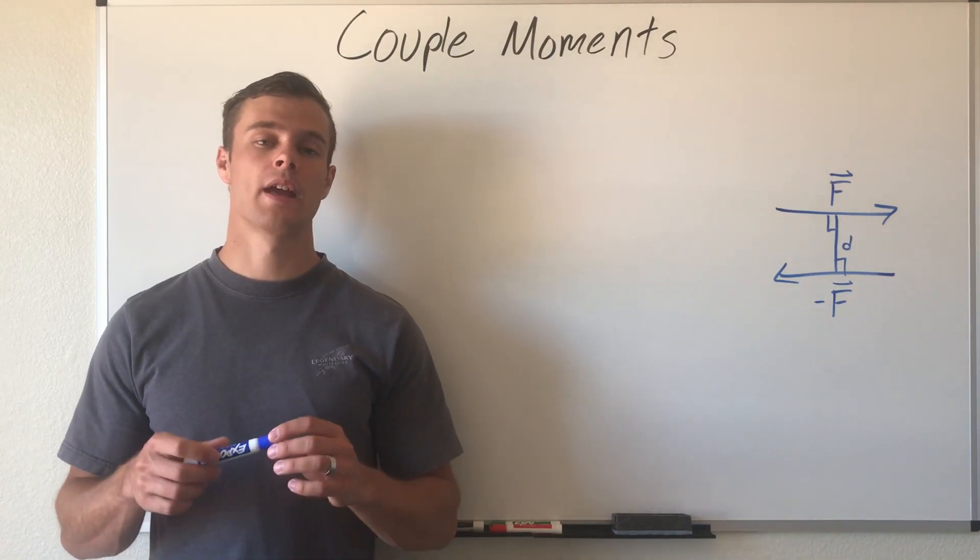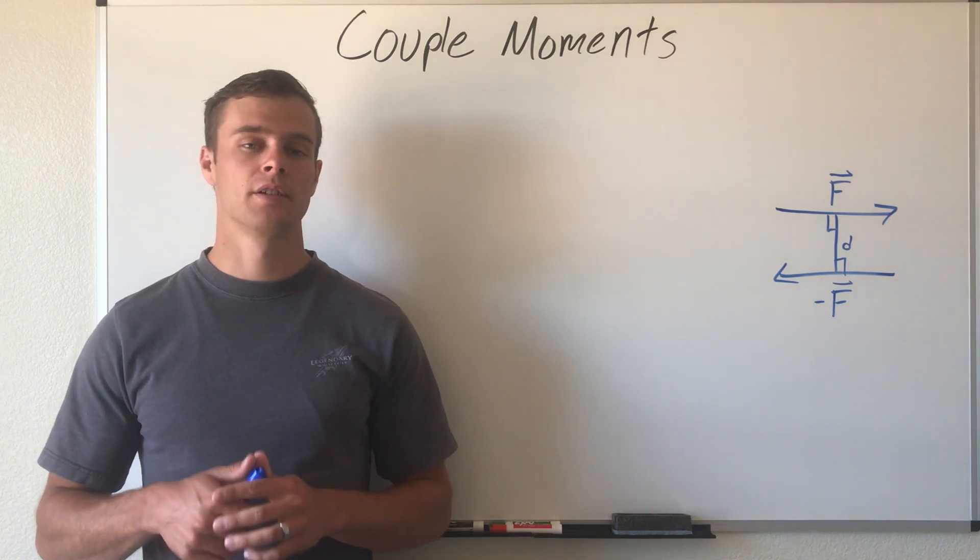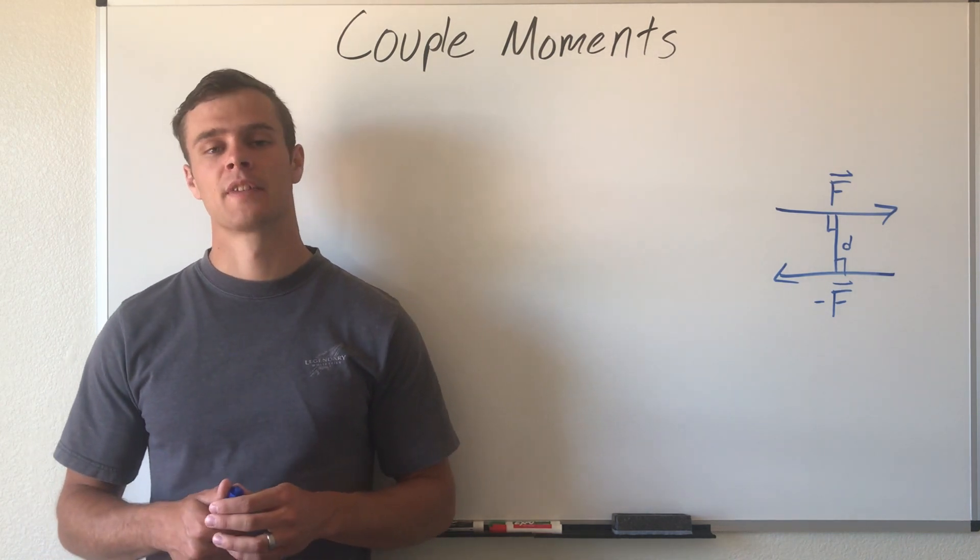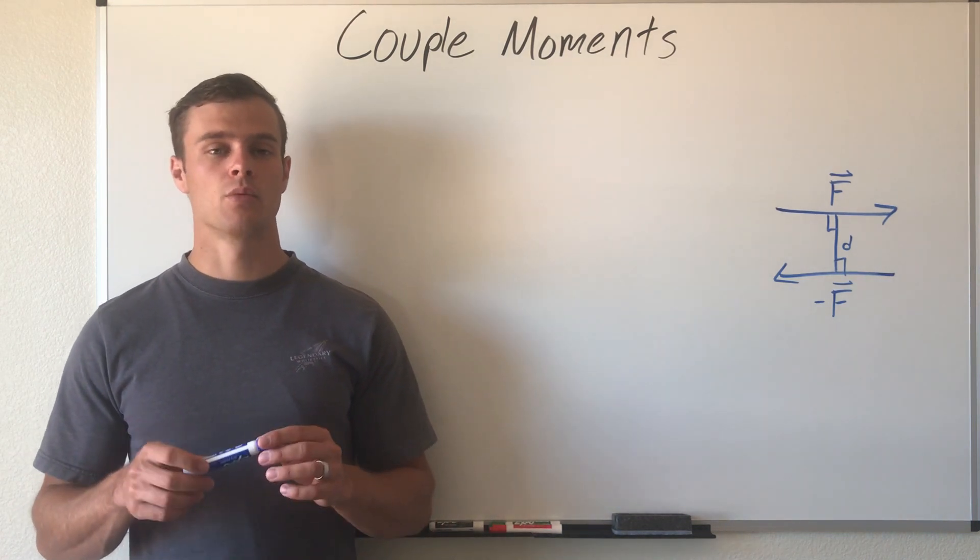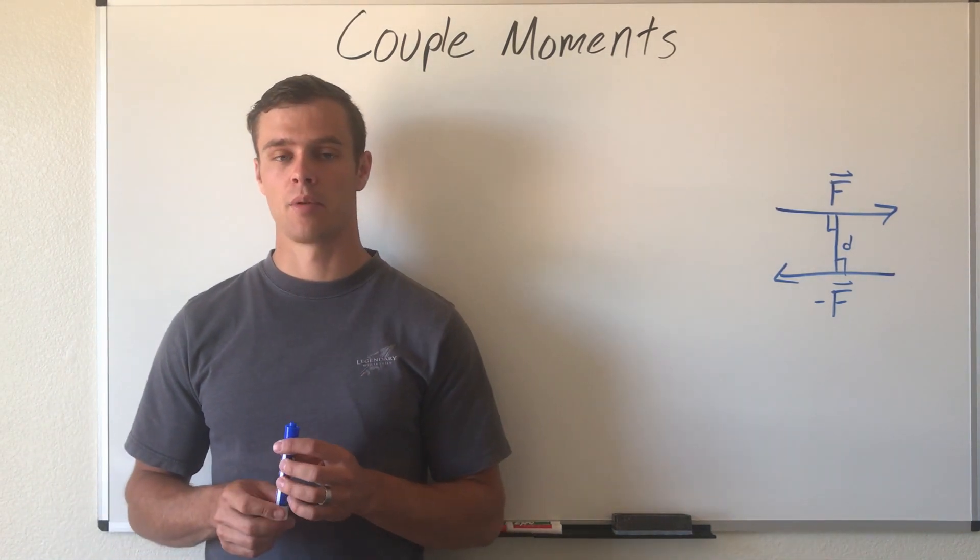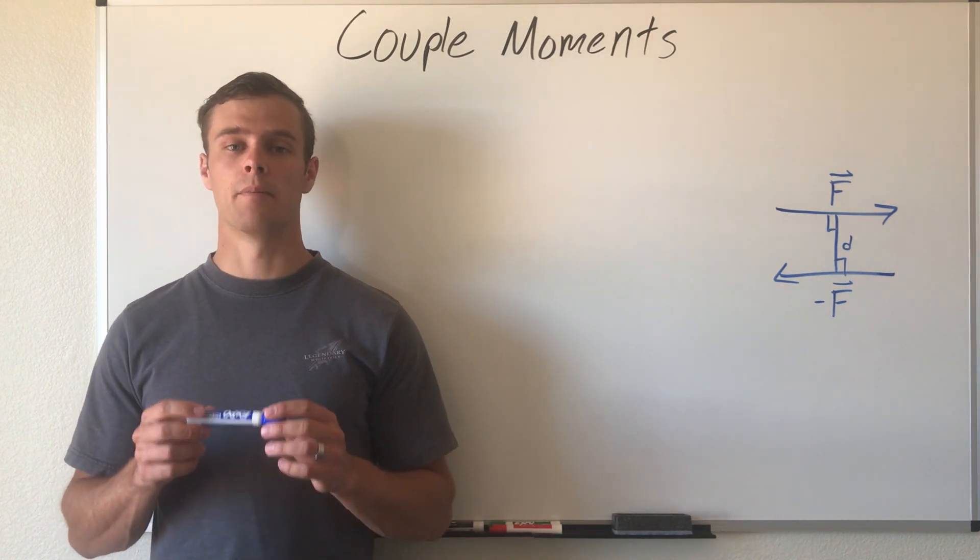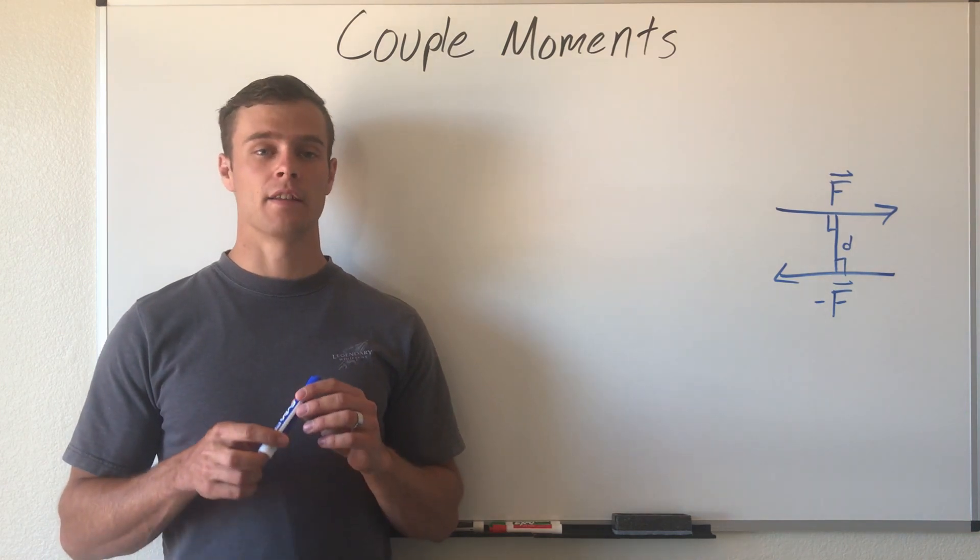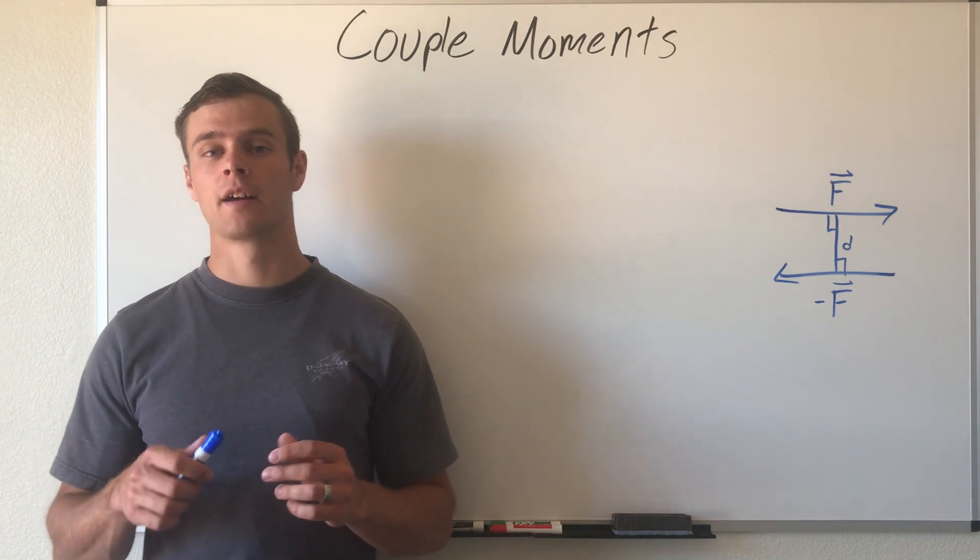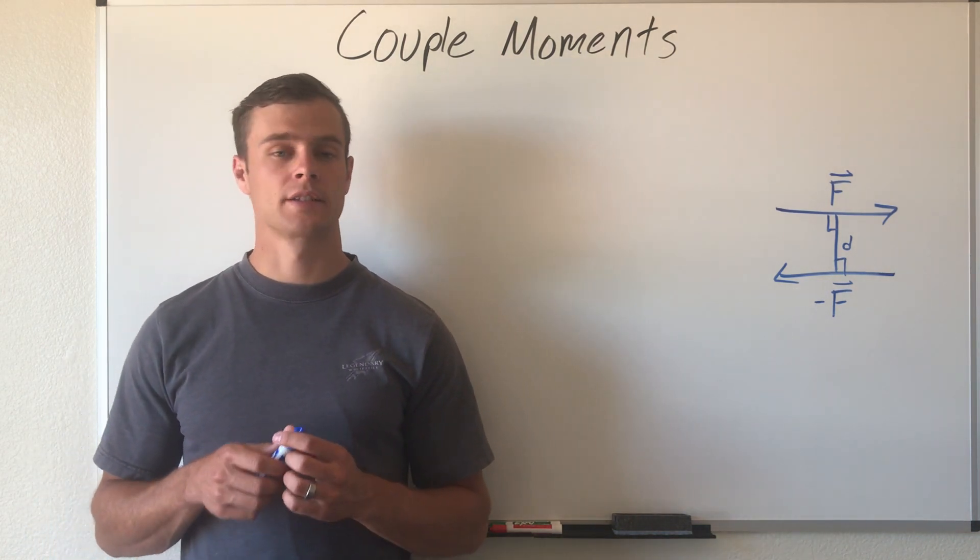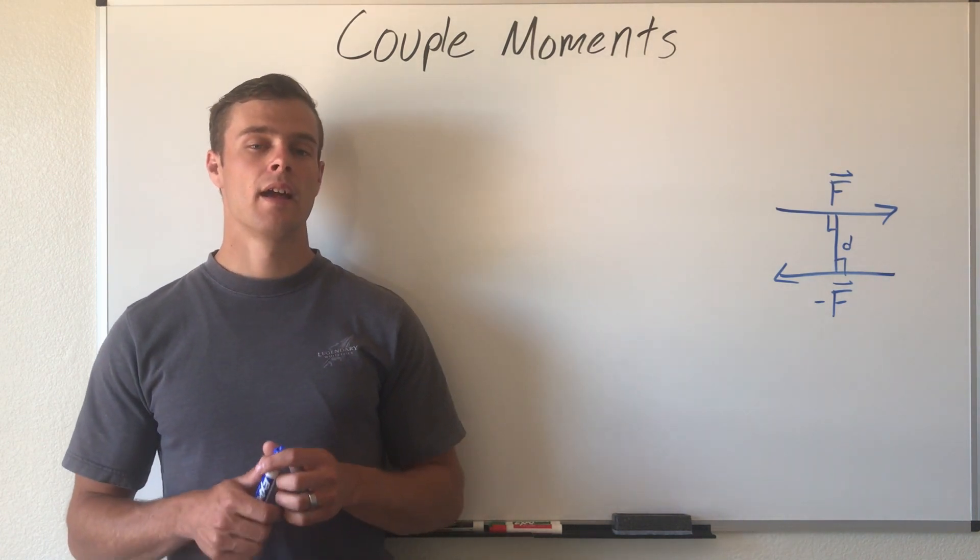So a couple moment is created by a couple where you have two forces that are equal in magnitude and parallel to each other, and you're causing rotation with those two forces. What we need to understand about couple moments is that they are a free vector. Unlike regular moments which have to have a fixed axis of rotation, couple moments can cause rotation about any point.